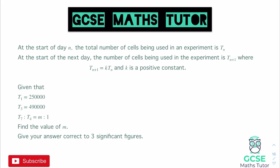It says given that: T1 = 250,000, T3 = 490,000, and then it tells us that T7 to T4 as a ratio is equal to m to 1. Find the value of m and give your answer correct to three significant figures.